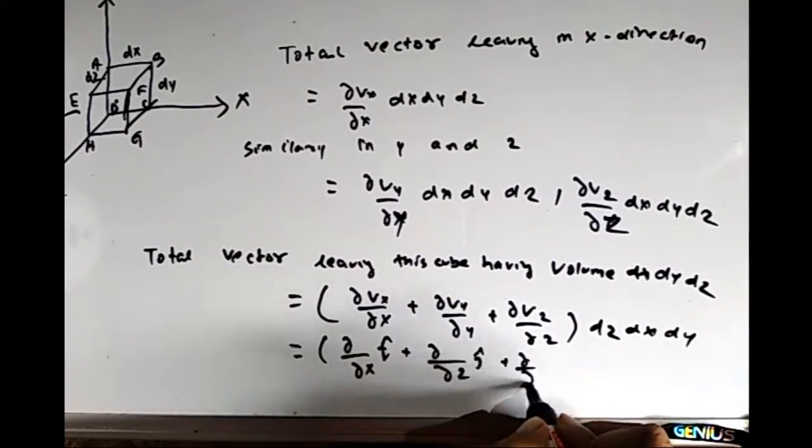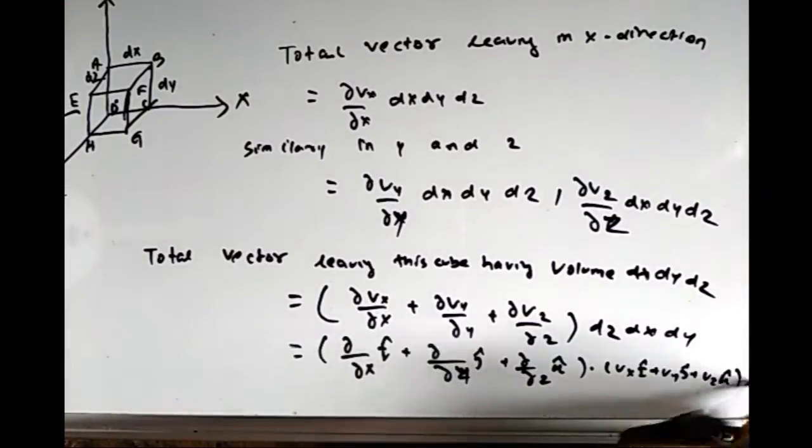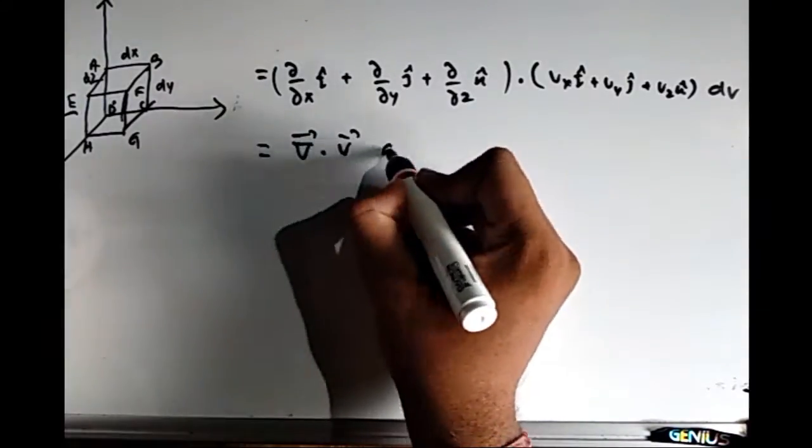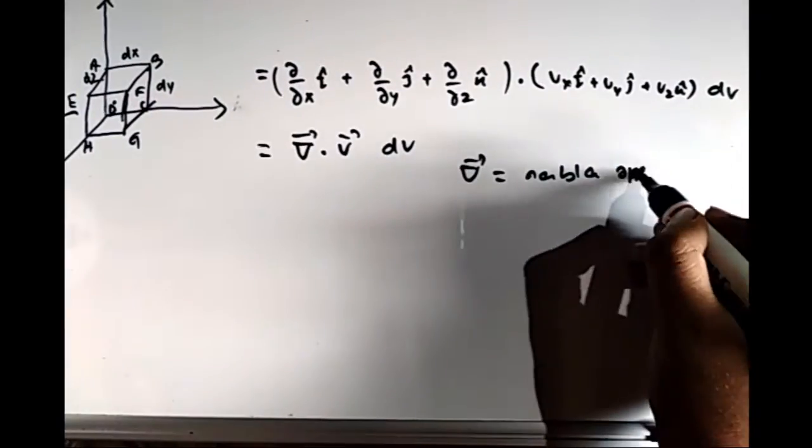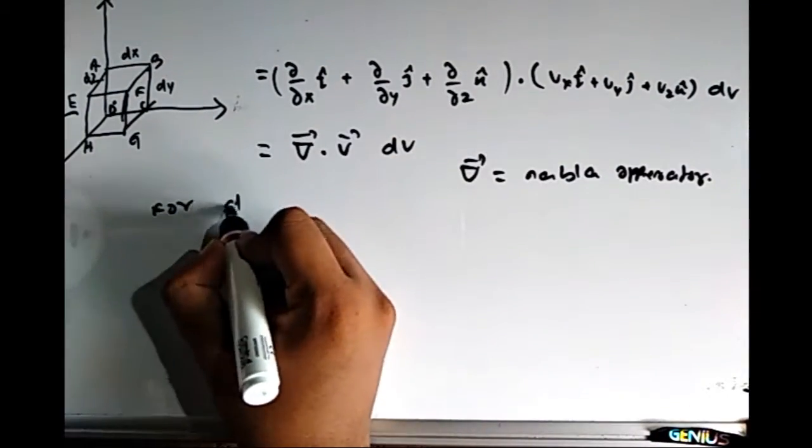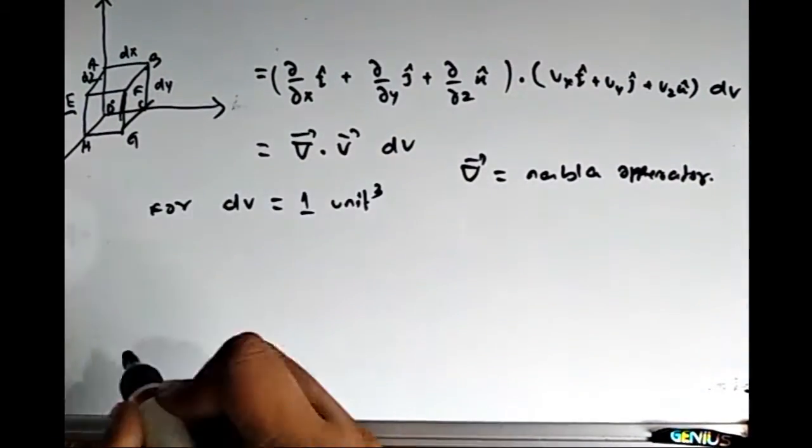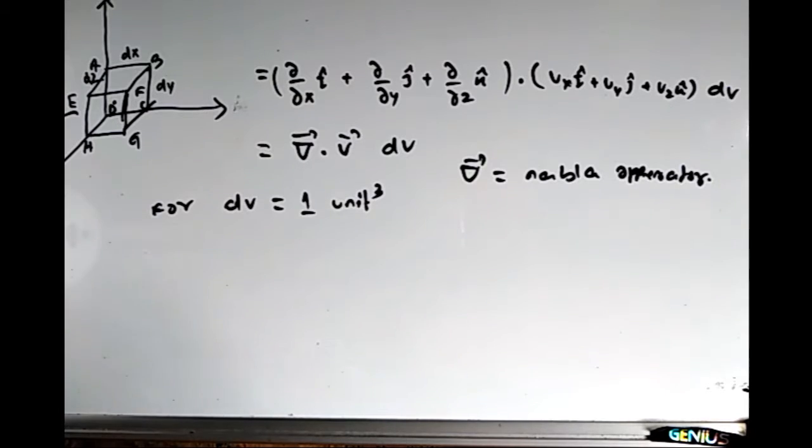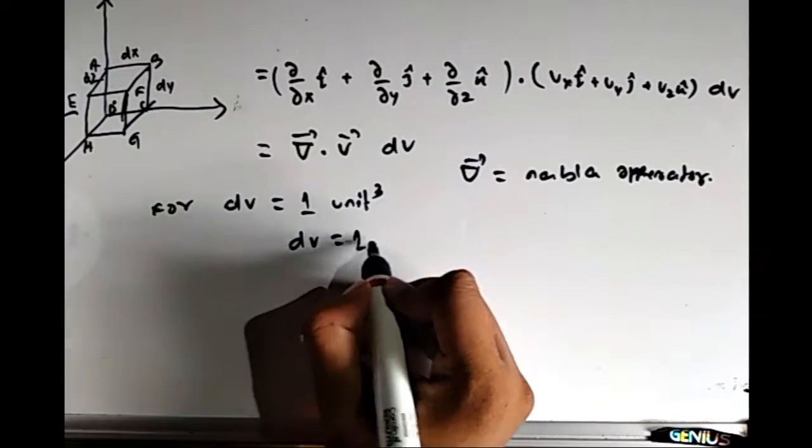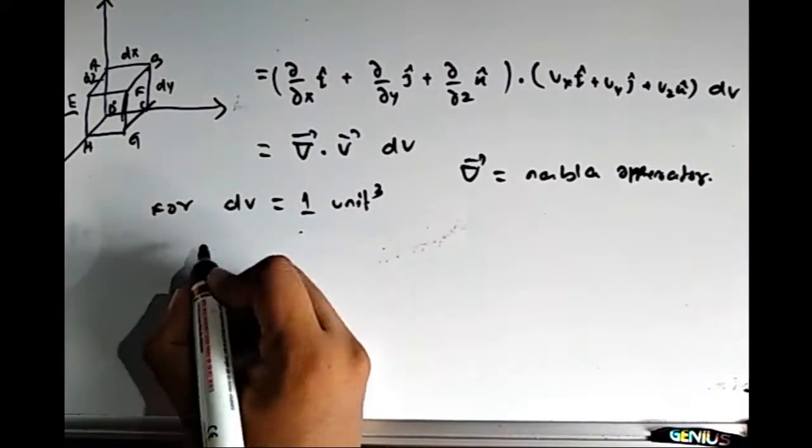This equals del by del x i cap plus del by del y j cap plus del by del z k cap dot product with Vx i cap plus Vy j cap plus Vz k cap times dV, or we can replace this as nabla, so nabla dot V dV. Note that nabla is the del operator.